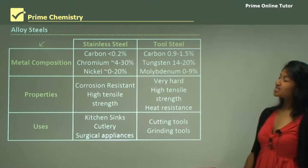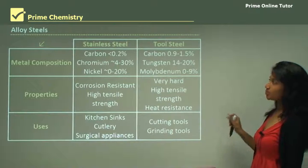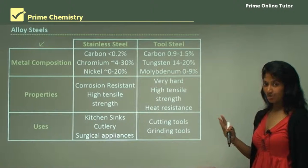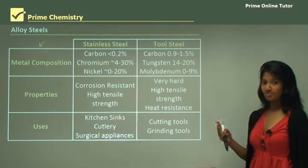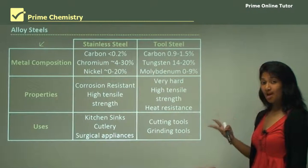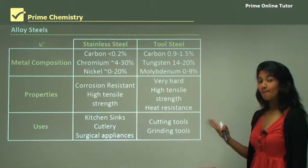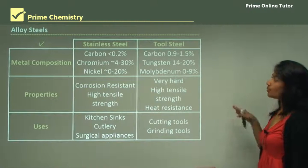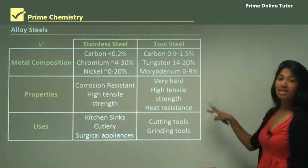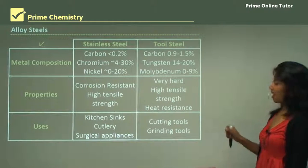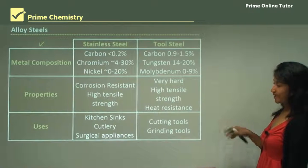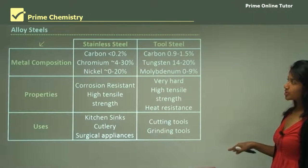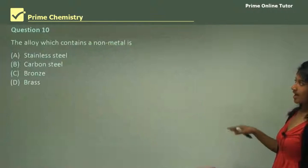In this section we learned about three different types of alloys. We looked at brass, bronze, and steel, and we looked at how they are used in application. We'll go to some questions now.